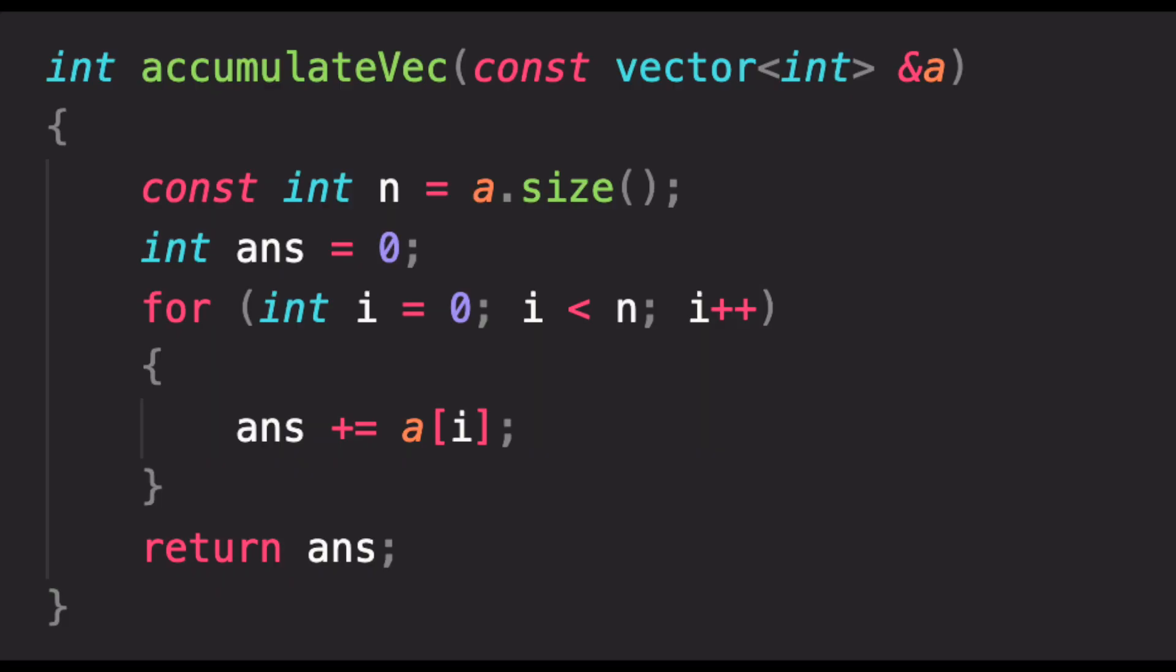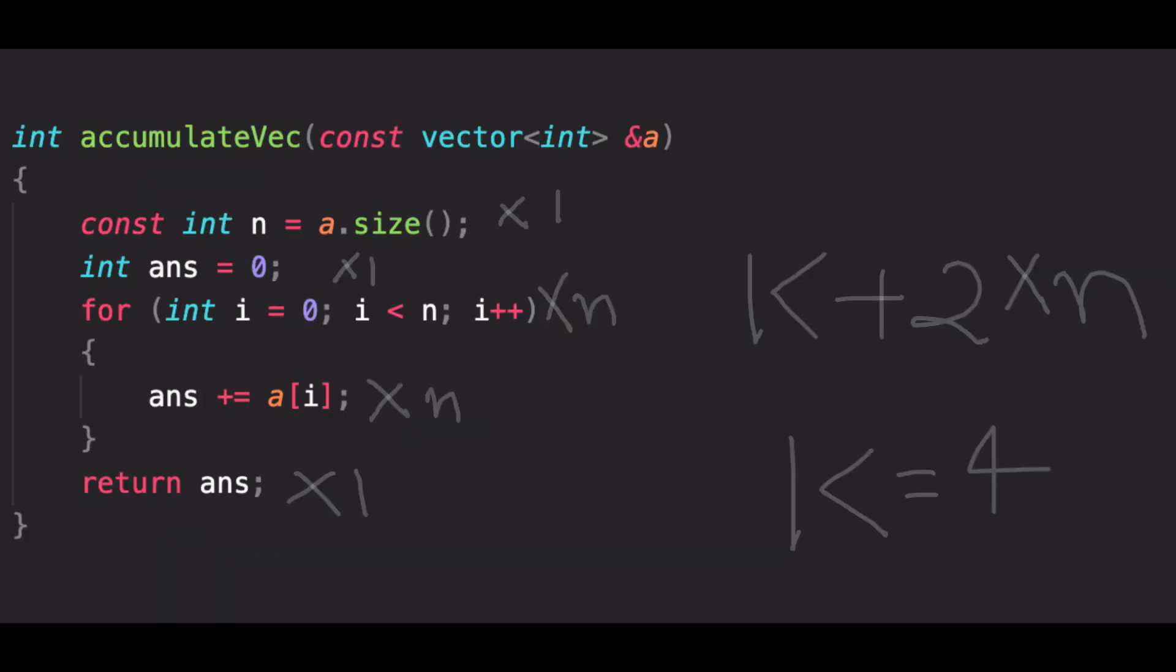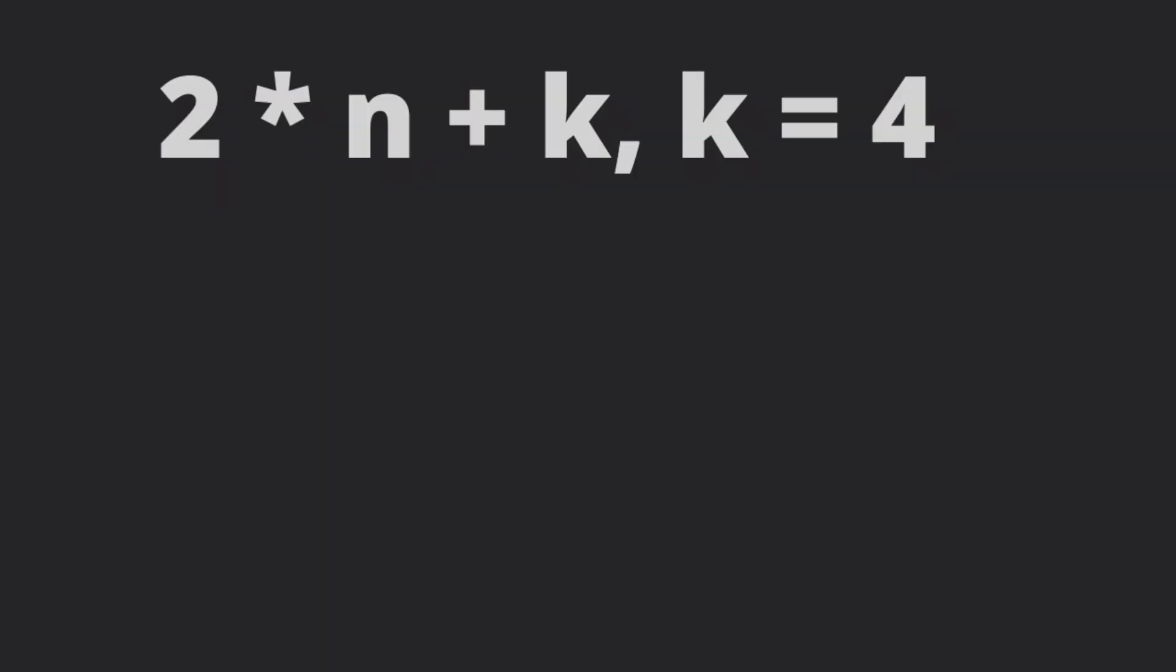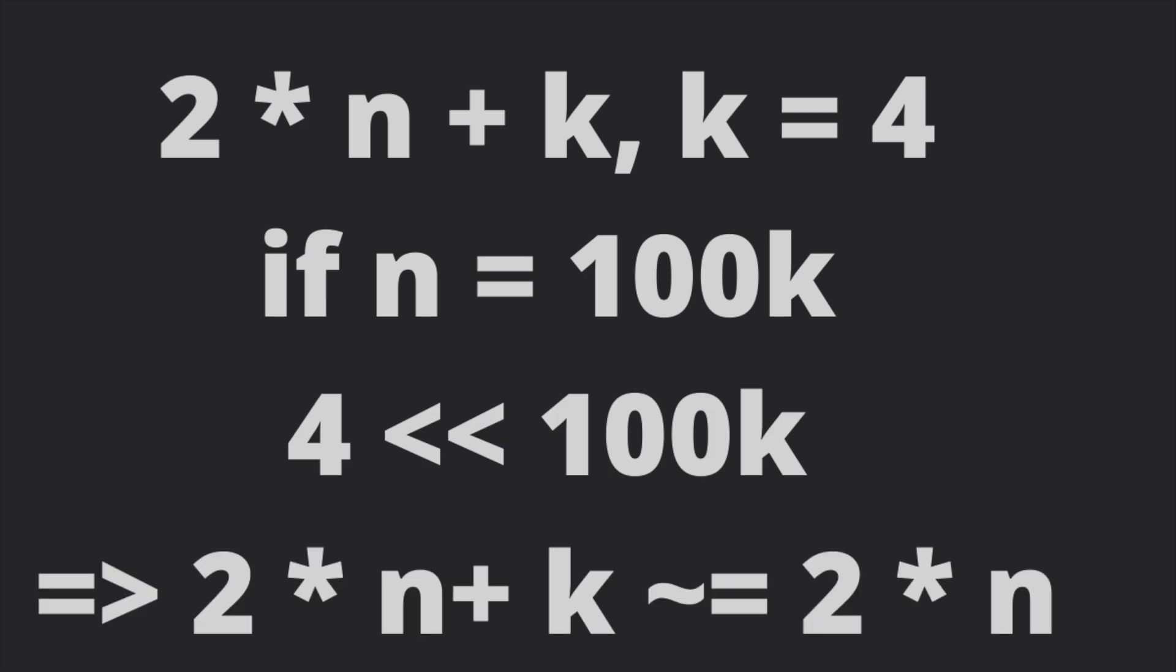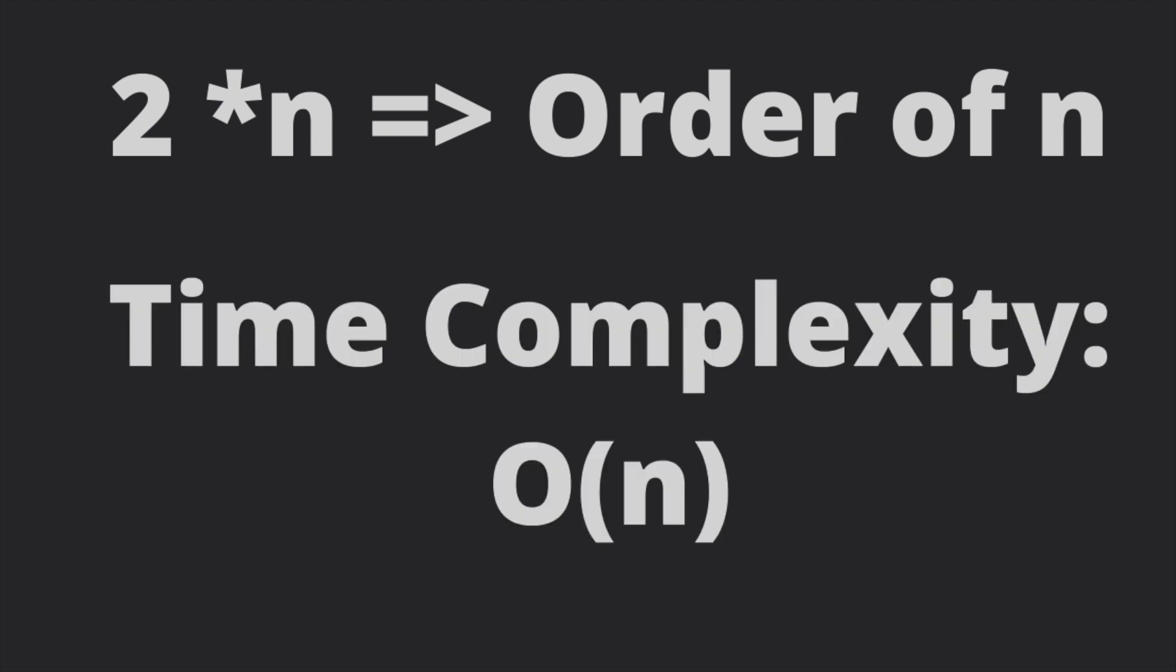And now we can count how many instructions are performed. Let's count the number of instructions for this accumulation function which sums up an array. Because of the loop, there are n plus k instructions where k is 3 or 4. Okay, so now we know how many instruction it takes and it mostly depends upon n. Let's say n is pretty big like 100,000. In that case, k is negligible. And so, the number of operations it takes is in order of n. And that, ladies and gentlemen, is its time complexity. Big O of n. Big O being the notation.